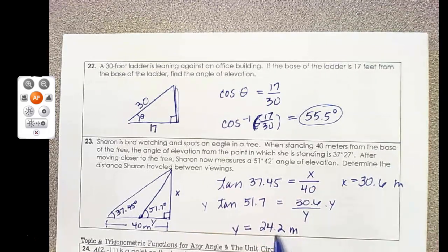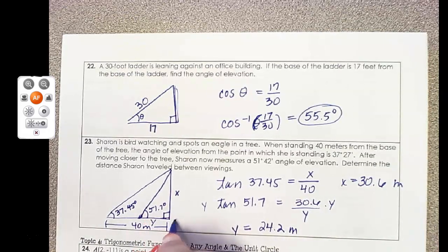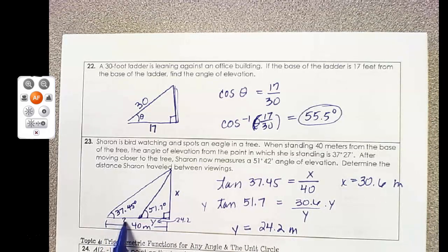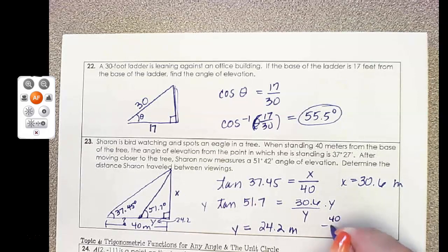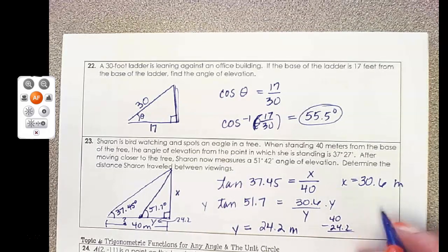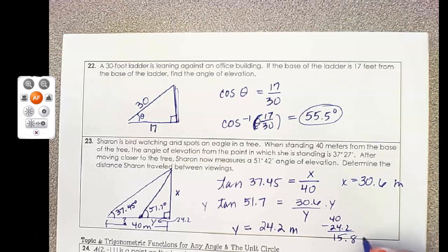So it asks, this is 24.2 right here. It asks, how much did she move closer? So I would go ahead and do 40 minus 24.2 to find the answer to that. And that is 15.8 feet.